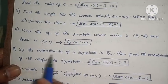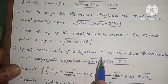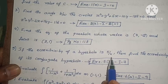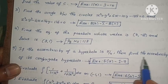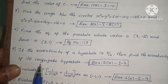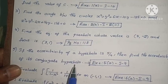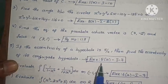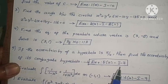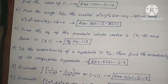Next: if the eccentricity of a hyperbola is 5/4, then find the eccentricity of its conjugate hyperbola. This is question 5, first exercise, third problem.